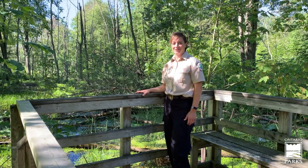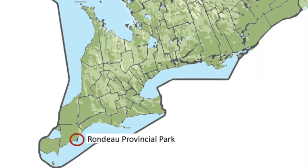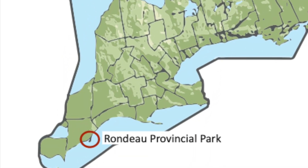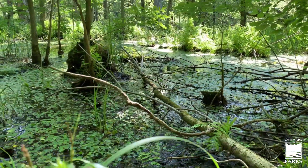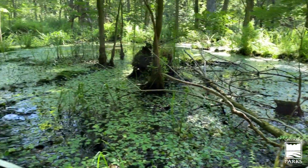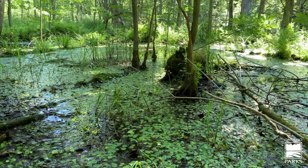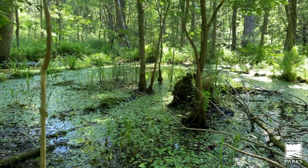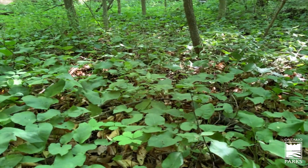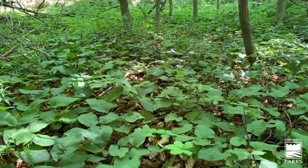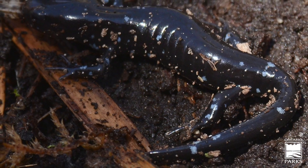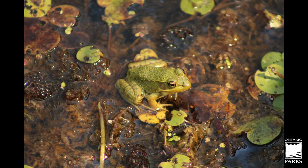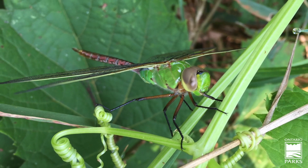Here we are back at Rondeau Provincial Park. At Rondeau, we have wetlands called sloughs. Sloughs are giant pockets of water that are found all over this park. They're seasonal, which means they're at their biggest and deepest in the spring, and by the fall many of them have dried up. They provide excellent habitat for wildlife like salamanders and frogs to lay their eggs, because there aren't any large fish that you might find in other wetlands. They're also excellent areas for wildlife viewing opportunities.